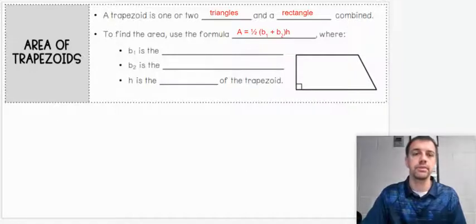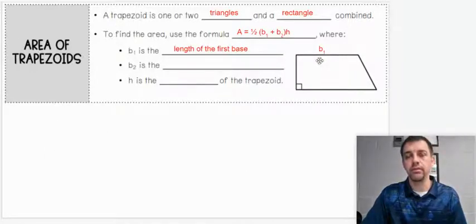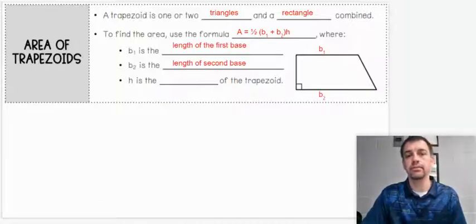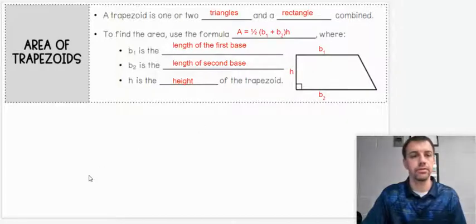Now, what do I mean by b sub 1 and b sub 2? Well, b sub 1 is the length on the top of the base, and b sub 2 is the length at the bottom. Notice the base on the top and the bottom run parallel to each other, whereas height is the height of the trapezoid. And notice they run perpendicular to each other.